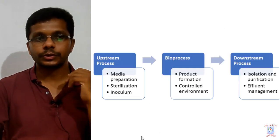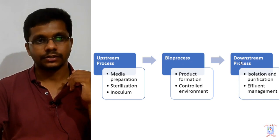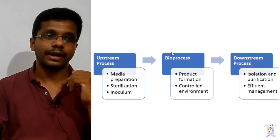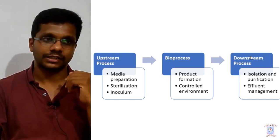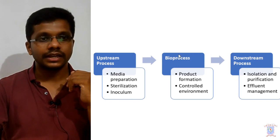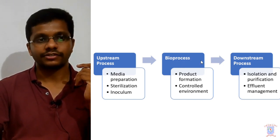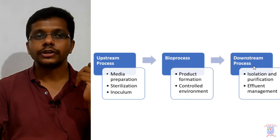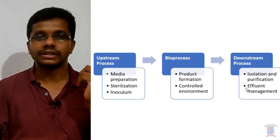Today we have covered the different stages of bioprocess: the upstream process, bioprocess or fermentation, and the downstream process. What we do before the bioprocess is called the upstream process, and what we do after the bioprocess or fermentation is called the downstream process. In the upstream process we have media preparation, sterilization, and inoculum preparation. During the bioprocess, product formation occurs and we maintain a controlled environment for maximum production. After the bioprocess we have downstream processing, where isolation and purification of the product occur along with effluent management.